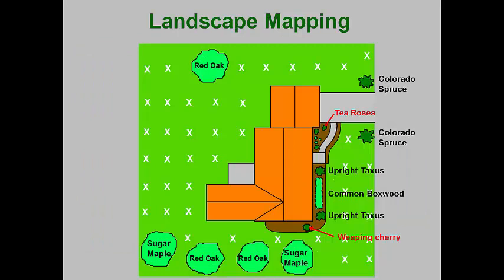One of the best tools that commercial landscape managers can use is landscape mapping. Creating a map of a customer's landscape can be easily done by making a crude map or even downloading earth satellite maps of customers' properties. Identifying key plants on this map can help the service technician locate plants that should receive more attention at the best times of the year. On this map, I've identified two key plants — roses and a weeping cherry tree — which always need extra care.